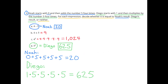Number 2: Noah starts with 0 and then adds the number 5 four times. Diego starts with 1 and then multiplies by the number 5 four times. For each expression, decide whether it is equal to Noah's result, Diego's result, or neither. Noah starts with 0 and then adds the number 5 four times — that's the same as 5 times 4.